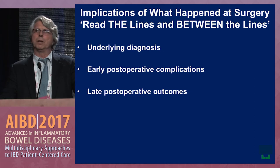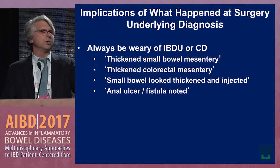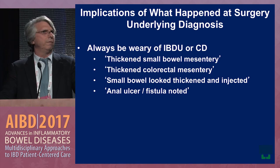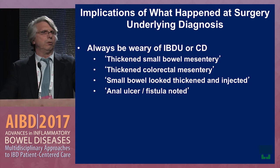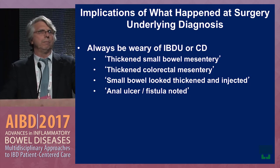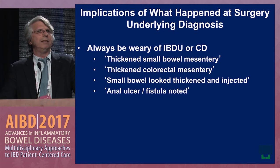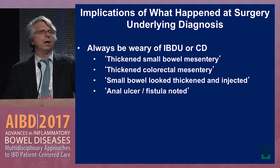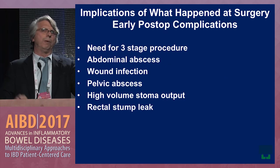In terms of the underlying diagnosis: when we take a patient for UC for a J pouch, we assume they have UC, but we're always wary of IBDU or Crohn's disease. When reading the op report, terms like thickened small bowel mesentery, thickened colorectal mesentery, small bowel appearing thickened and injected, or evidence of perianal disease should raise concern about the underlying diagnosis. This has huge implications for how patients do after surgery.